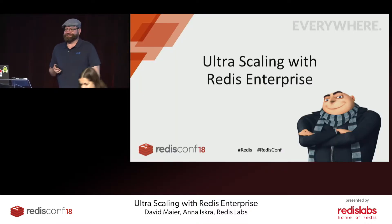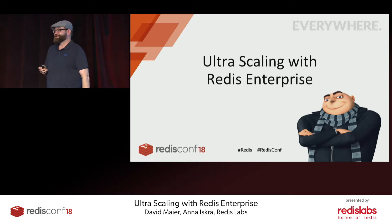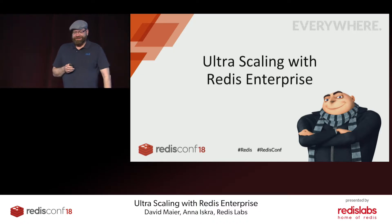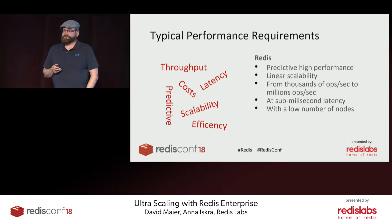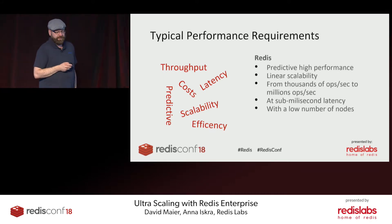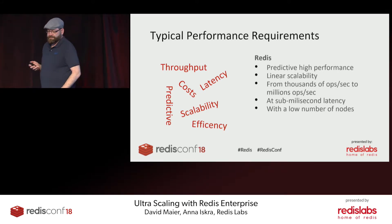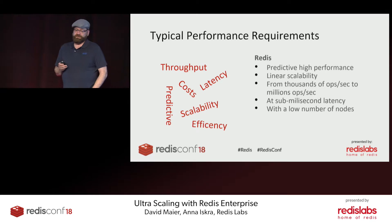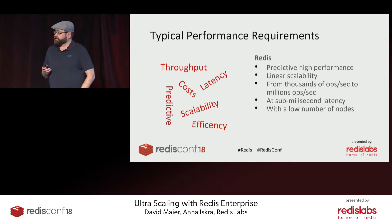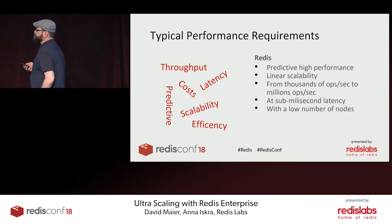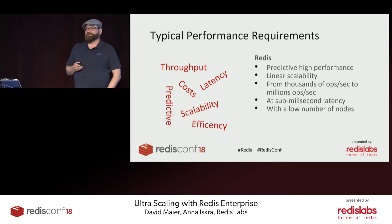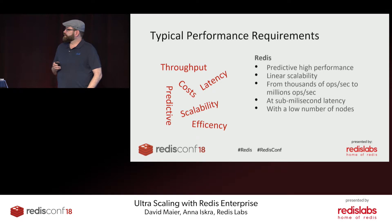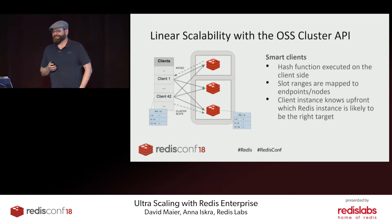What are typically the performance requirements you have? There are a few: throughput, latency, scalability, predictive performance, efficiency, and so on. Redis provides all of this — we can scale from thousands of operations per second up to millions of operations per second at sub-millisecond latency, with a comparably low number of nodes compared to other vendors. Most importantly, the performance behavior is predictive — if you size it correctly.